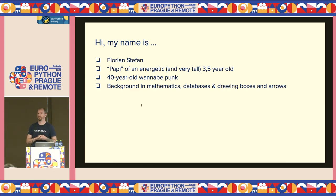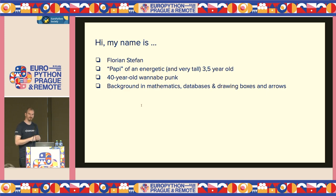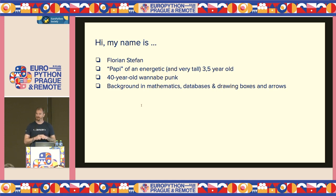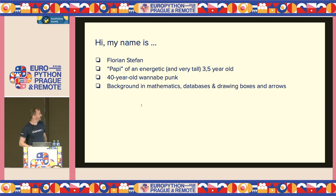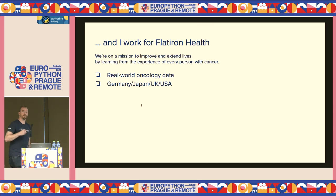Before I get started, some things about myself. My name is Florian, I'm from Germany, based in Berlin. I have a very energetic little son — I just attended the talk about how to teach coding to kids. I'm already 40 years old and the last time I was in Prague was 27 years ago, so I got old.